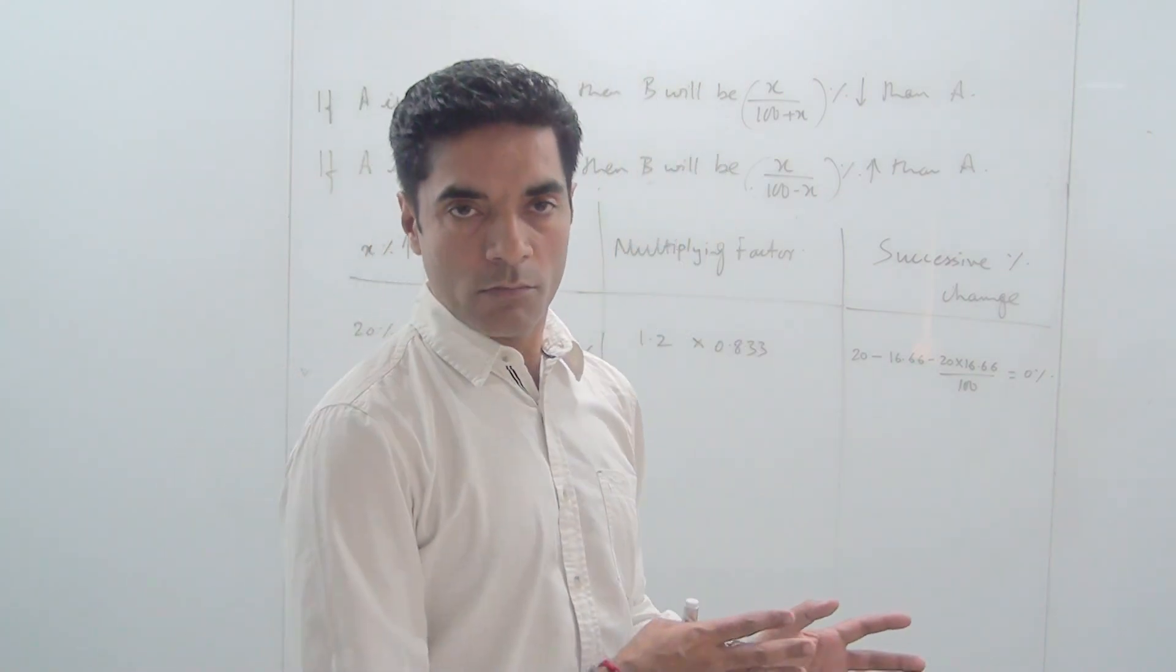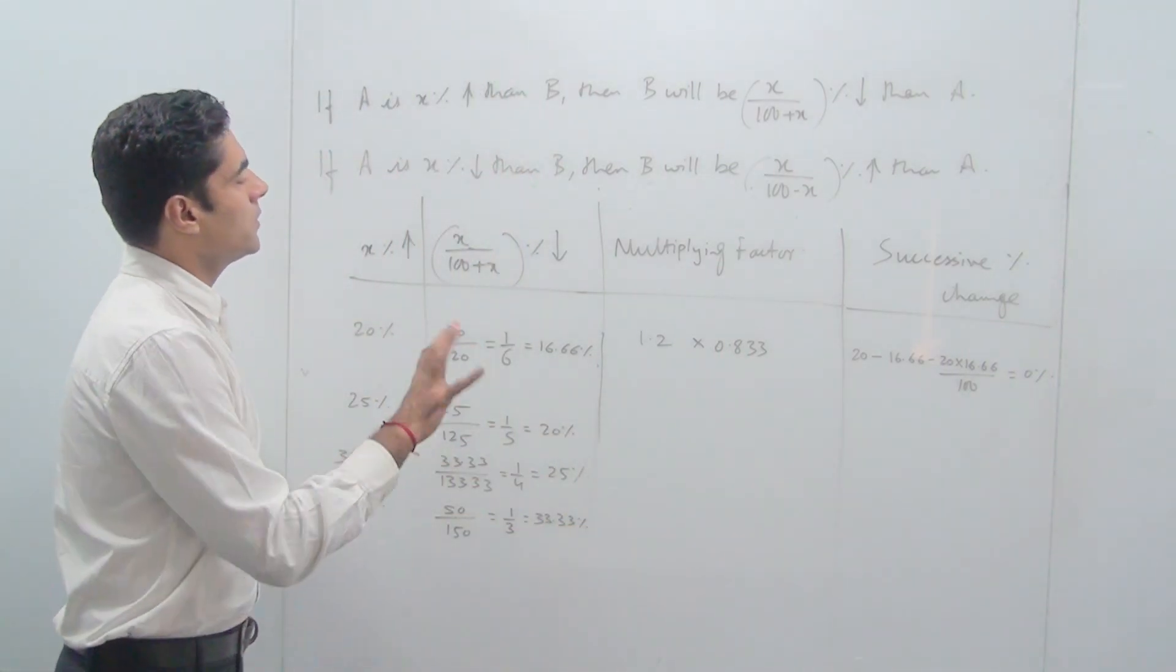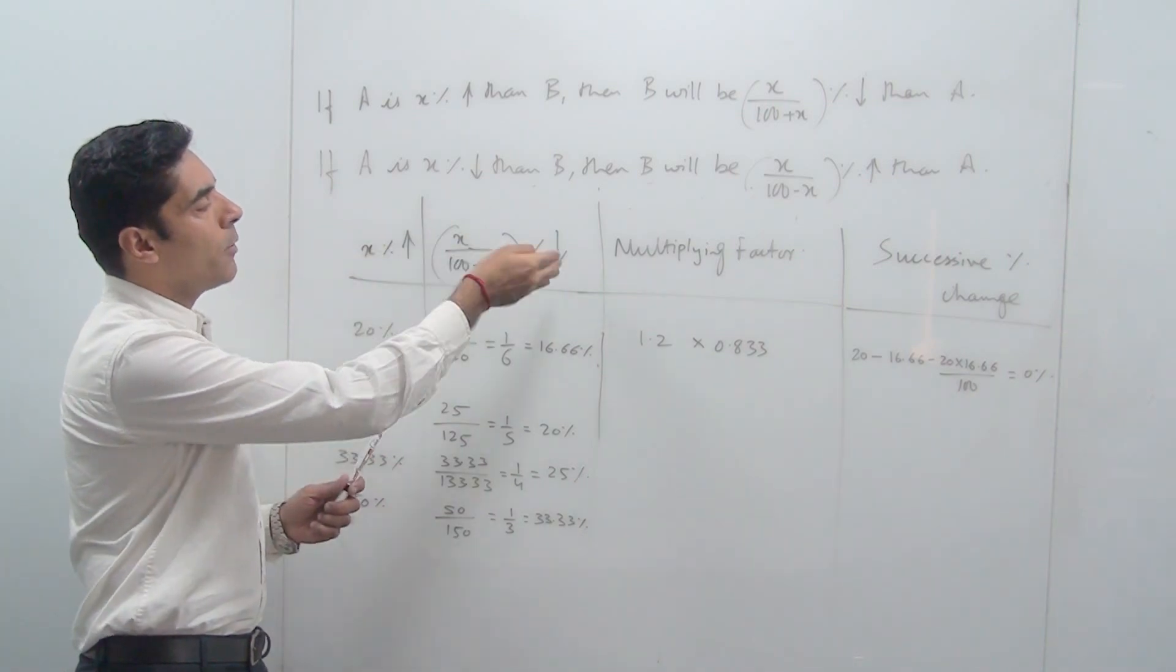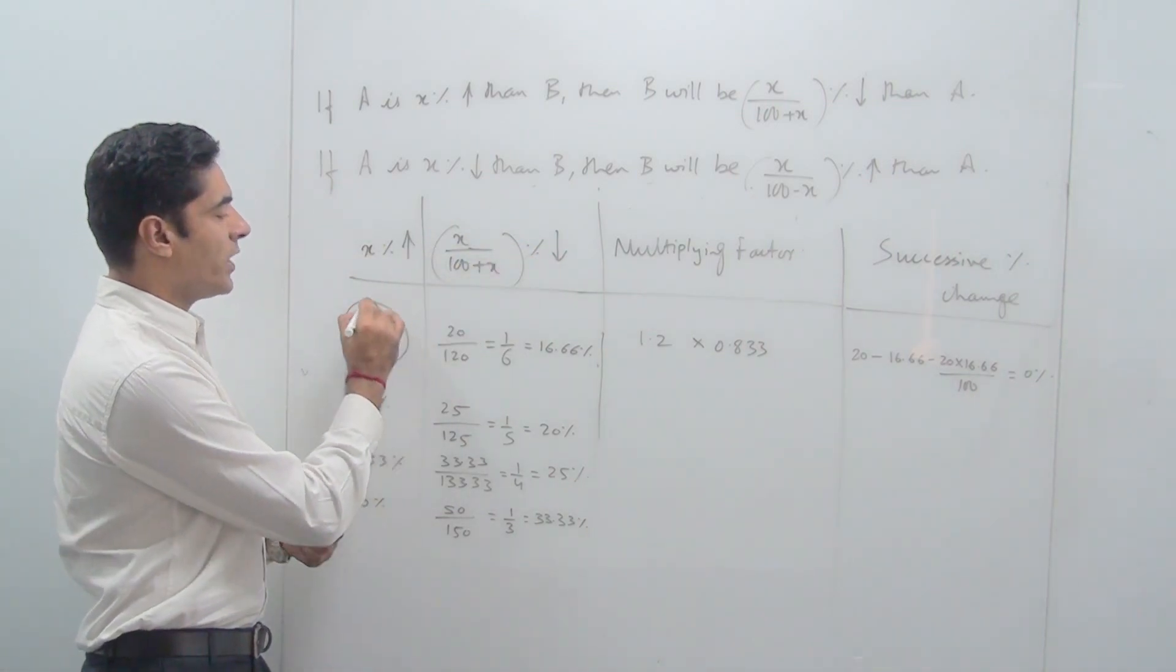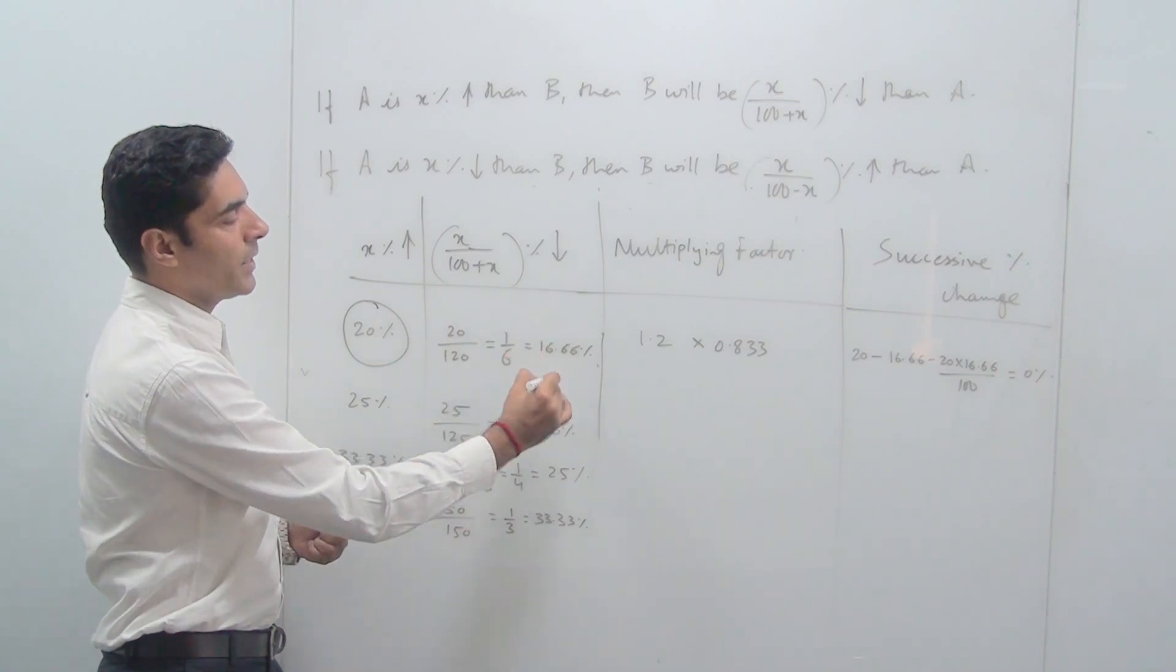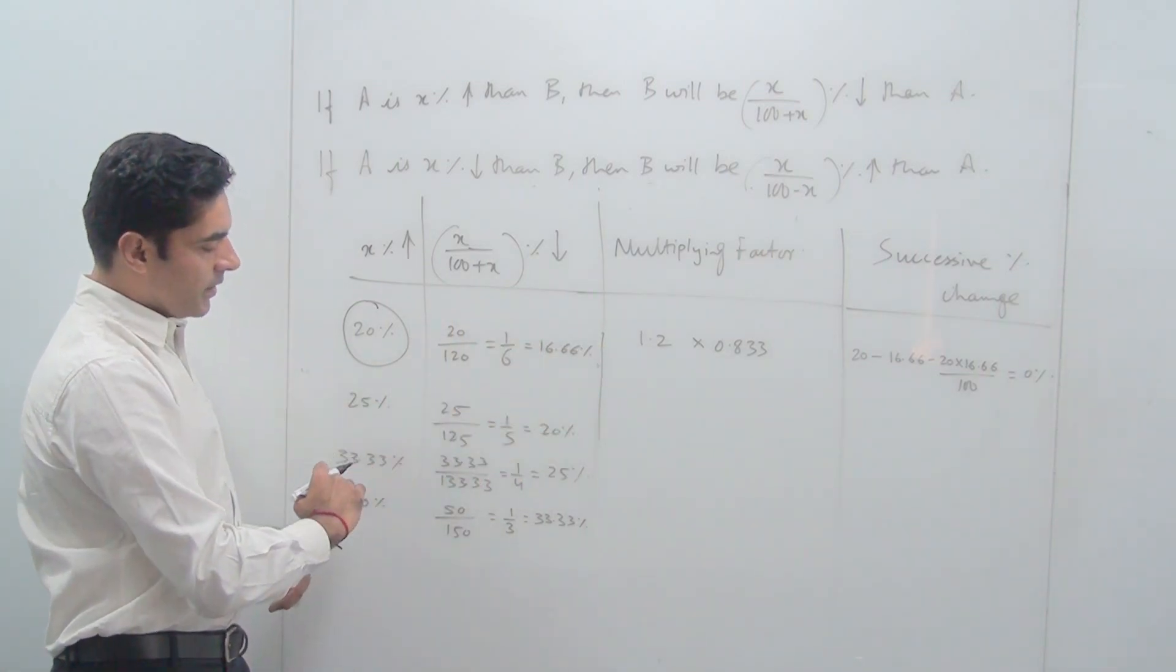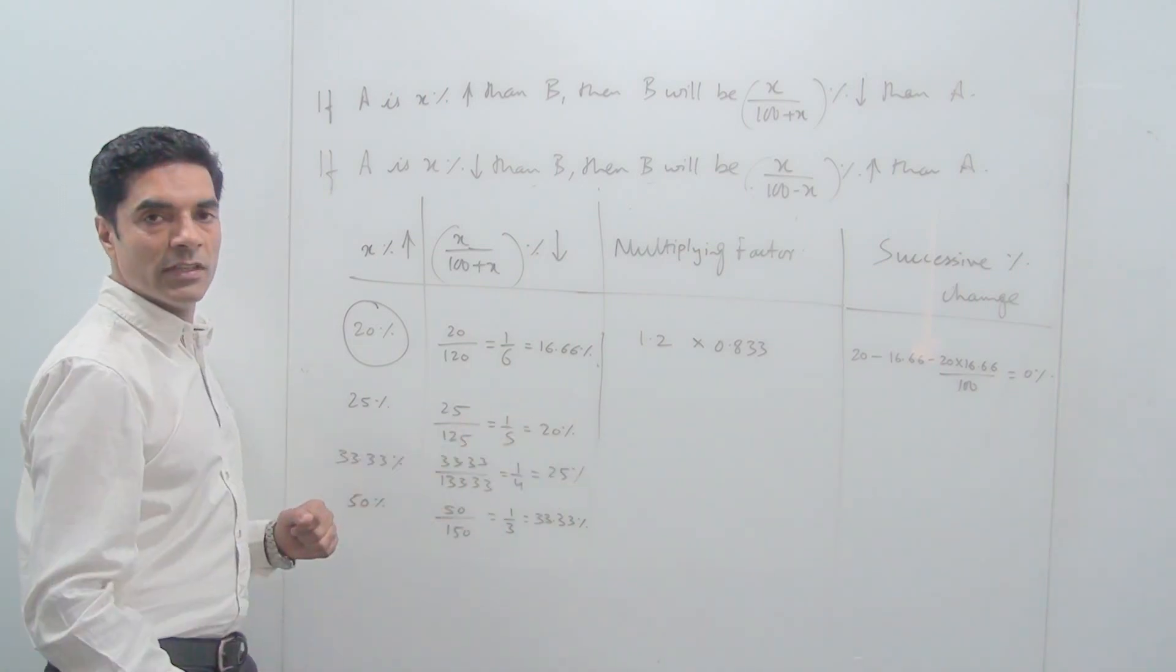In case you have understood everything, this is the crux of the matter: x percent increase will get compensated by a decrease of x divided by 100 plus x. If I put the value of x as 20, this is 20 upon 120 which is 1 by 6, that is 16.66. So 25 becomes 20, 33.33 becomes 25, and 50 gets compensated by a decrease of 33.